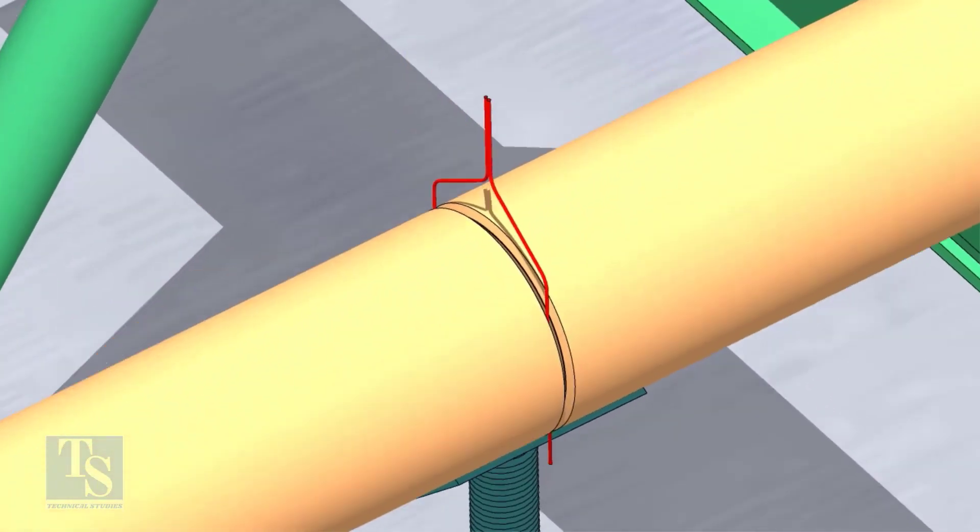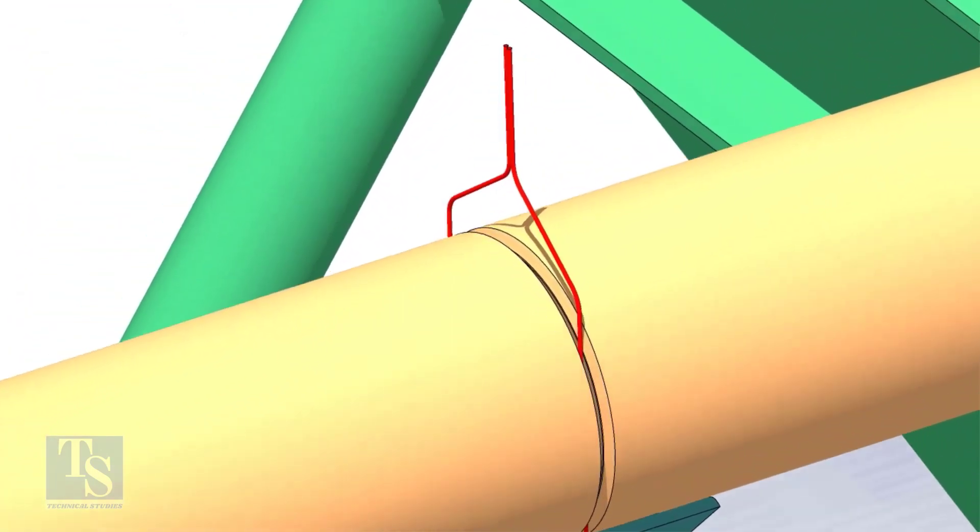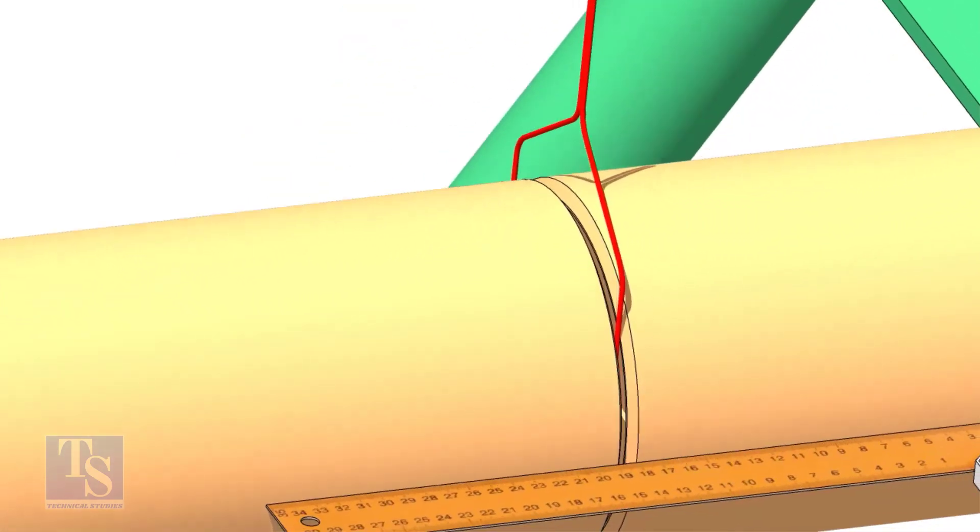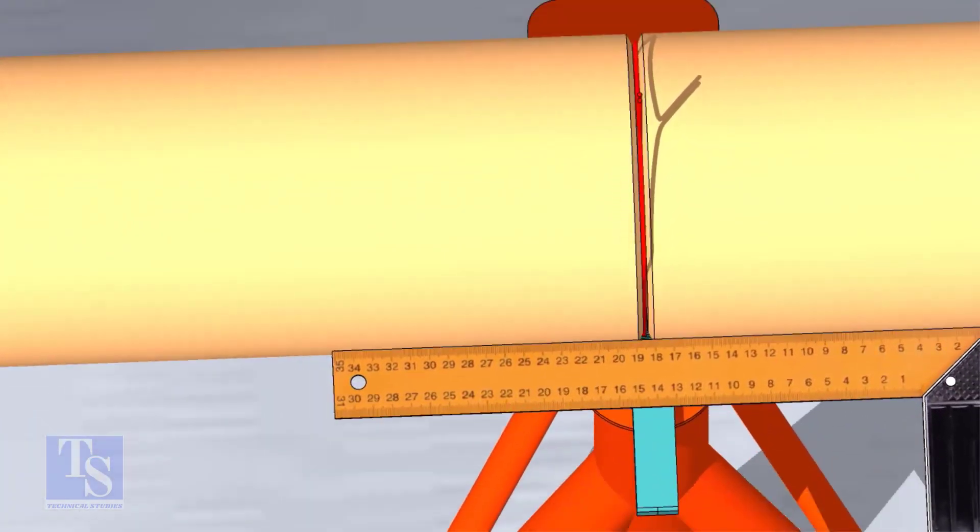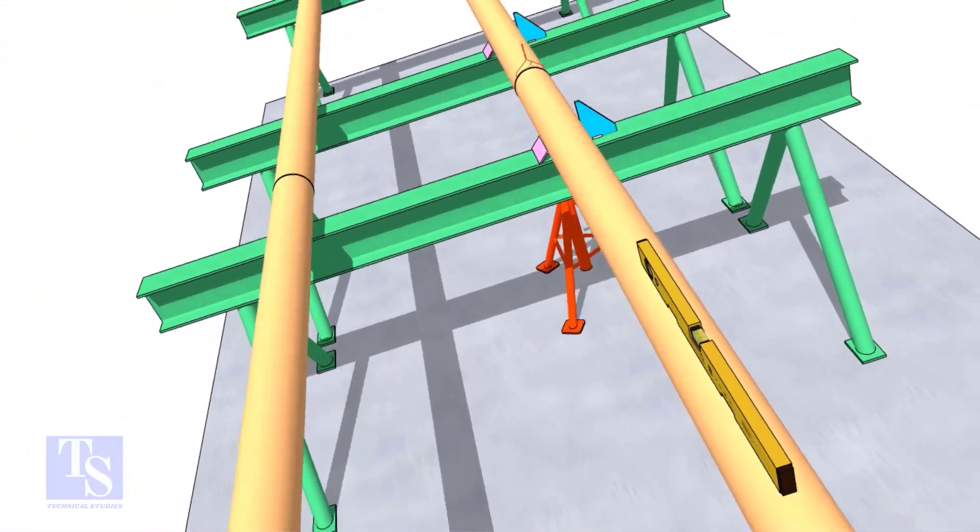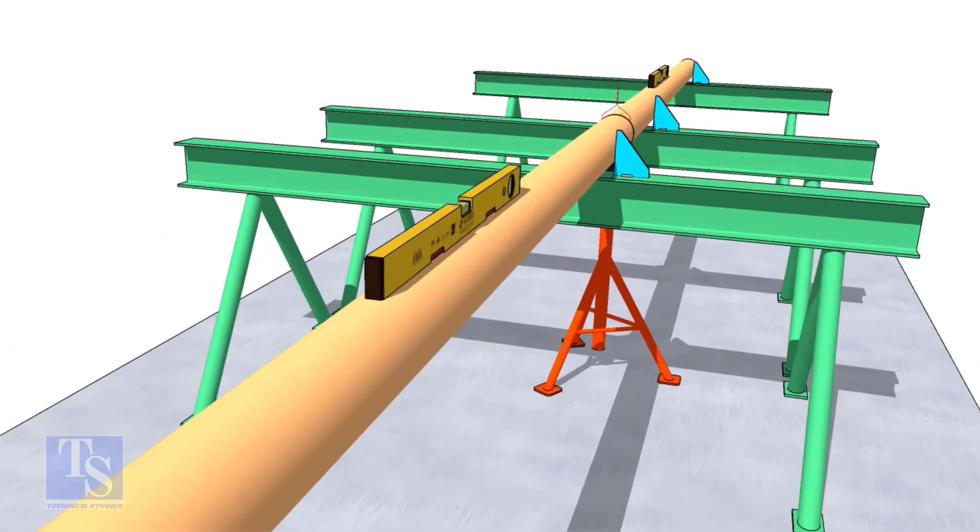Put the gap rod between the joint. Check if there is any overlap. Check the straightness of the pipes by looking from one end of the pipes. This is the best way to check the straightness.